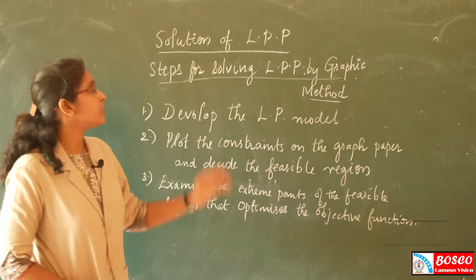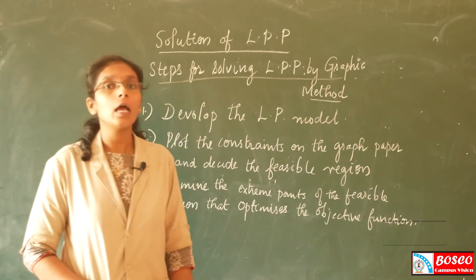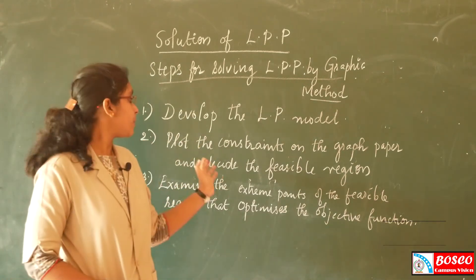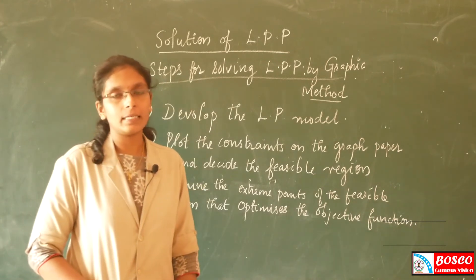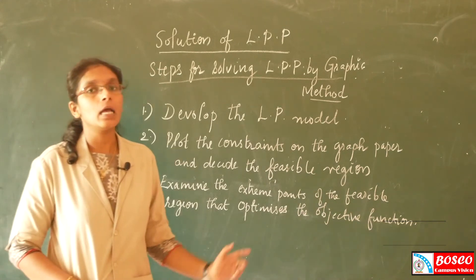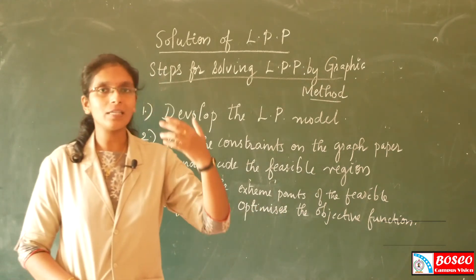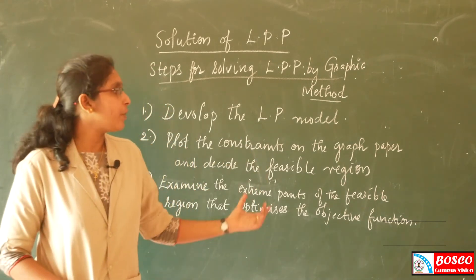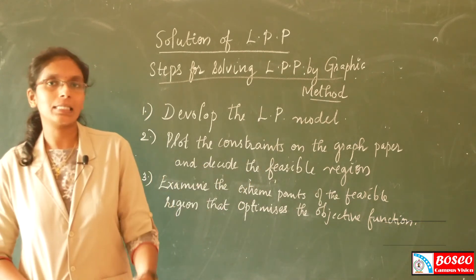In conclusion, there are three steps for solving LPP using the graphical method: the first step is developing the LP model; the second step is plotting the constraints on the graph paper and deciding the feasible region; and the third step is examining the extreme points of the feasible region to optimize the objective function. We will discuss problems in the next session.